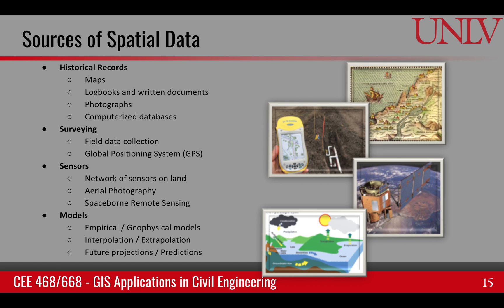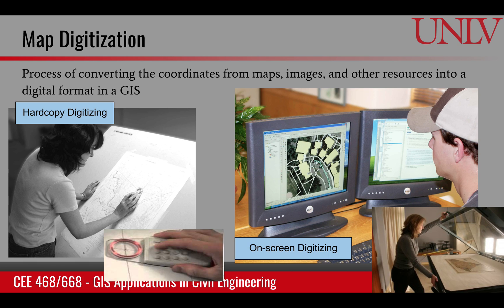Especially for historical maps or maps that come as a printout, we have to digitize those maps. In the digitization process, we're converting the coordinates from maps, images, and other resources into a digital format in GIS. Previously, a lot of hard copy digitization was done, and it's still being done.